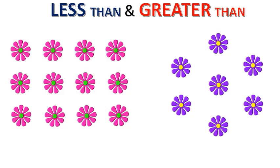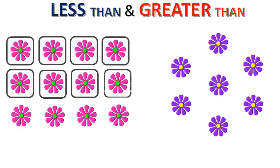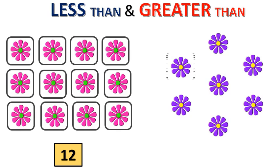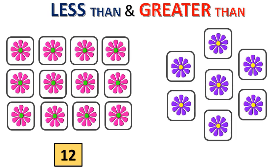Now let's take another example. Here we have a set of pink flowers and purple flowers. Let's start counting the pink flowers: 1, 2, 3, 4, 5, 6, 7, 8, 9, 10, 11 and 12. So we have 12 pink flowers. Now let's count the purple flowers: 1, 2, 3, 4, 5, 6 and 7. So we have 7 purple flowers. You have to find which one is greater — either 12 or 7. Number 12 is greater than 7 and 7 is less than 12.